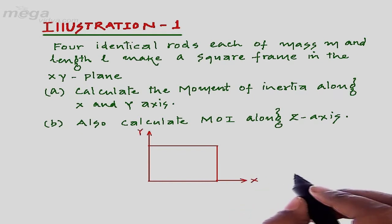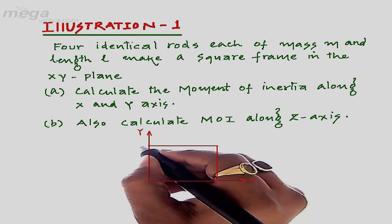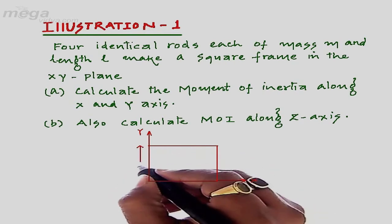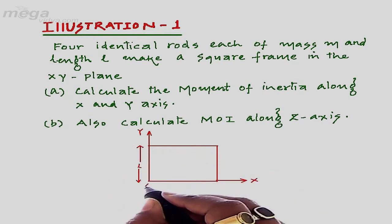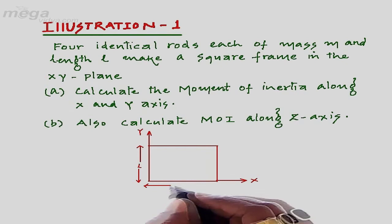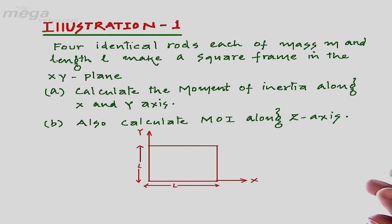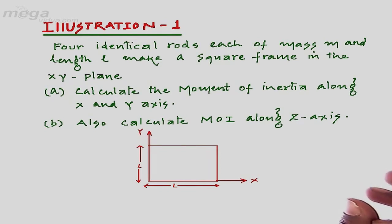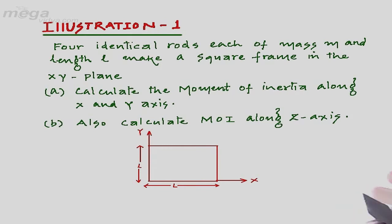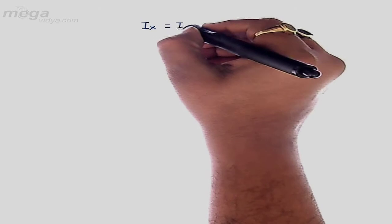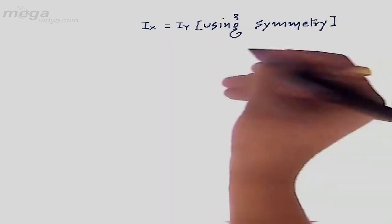Each rod has mass m and length l. So the length of the first rod will be l and the adjacent rod will also be l. From the figure it is clear that the frame is symmetric along the x-axis as well as the y-axis. So the moment of inertia along the x-axis and along the y-axis will be the same — Ix will be equal to Iy using symmetry.